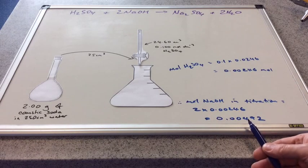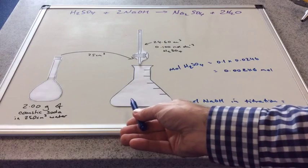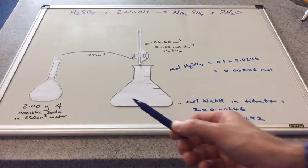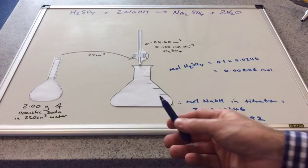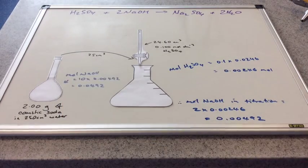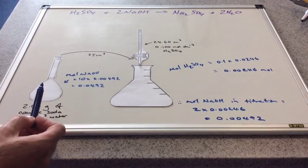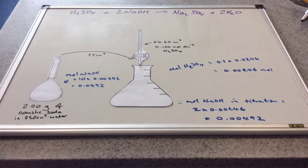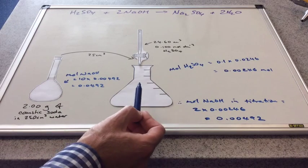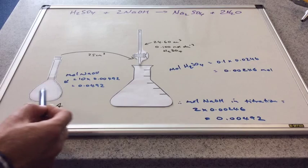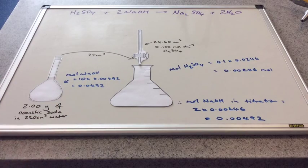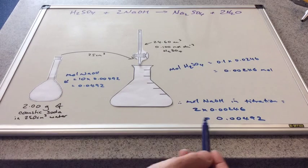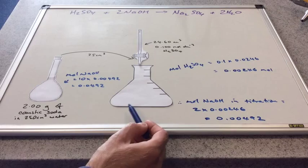Remember, these are the moles present in the titration flask. The sodium hydroxide originated from the volumetric flask, so the next step is to work out how many moles are in there. The moles in the volumetric flask must be ten times the amount used in the titration, because 25 cm³ were used but the original flask was ten times bigger.